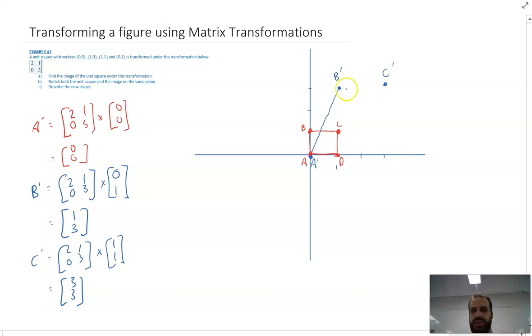Okay, and I can obviously draw a line between B dash and C dash. Now what else have we got? We've got D dash. D dash again: [2,1; 0,3] times, and this one is (1,0) this time. Okay, and then we can just figure out what that matrix multiplication gives us. That is (2,0).